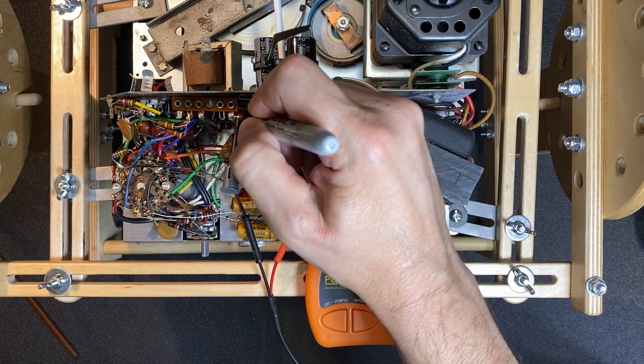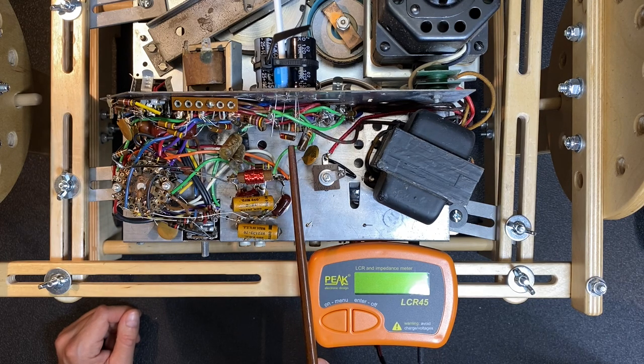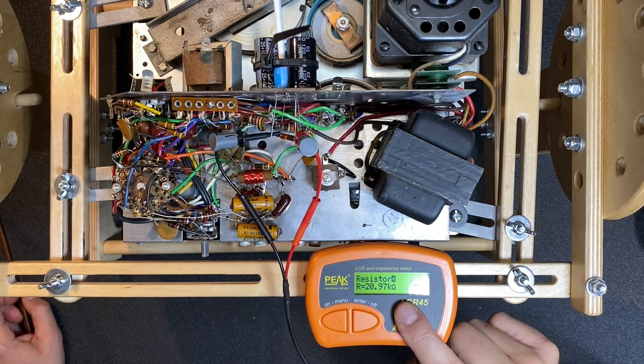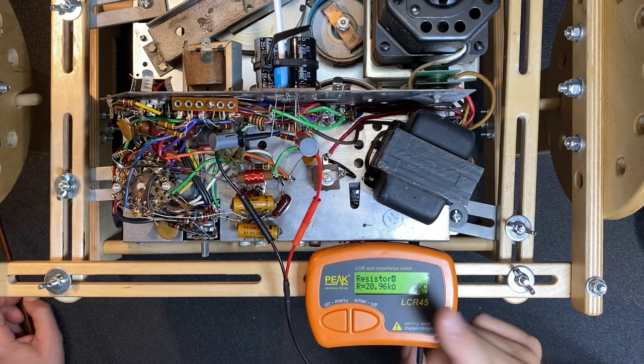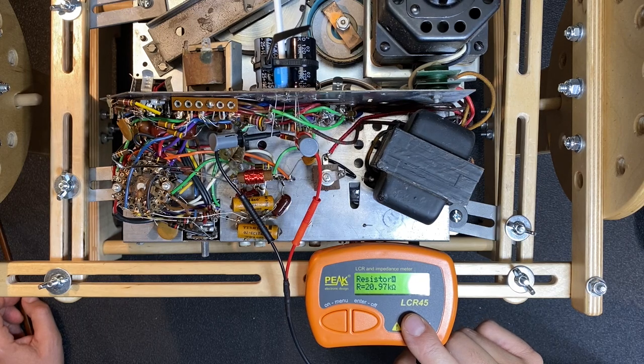Let's test this red-red-orange resistor now. This should measure 22K, and this one's coming in a little bit low at about 21K. But no problem, as this is still within the 20% tolerance for the resistor.